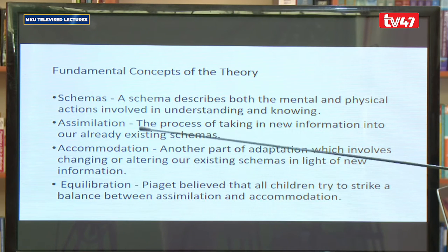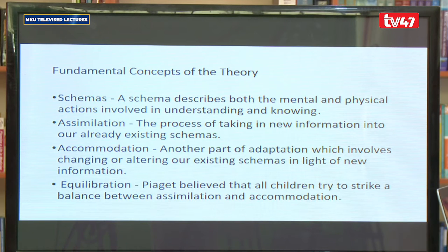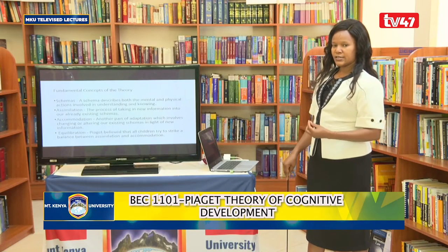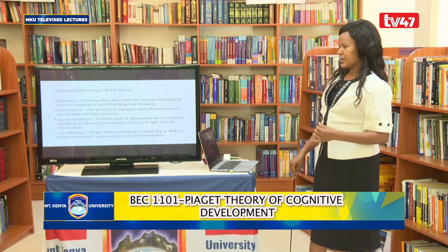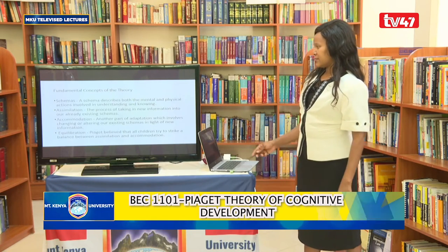There are certain key terms that are very important for us to understand as we go through Piaget's theory, and one of them is a schema. A schema describes both the mental and physical actions that are involved in understanding and knowing. A schema is like a mental structure which exists in the mind — it's not something we can physically see, but through actions we are able to tell that a certain mental schema is existing.